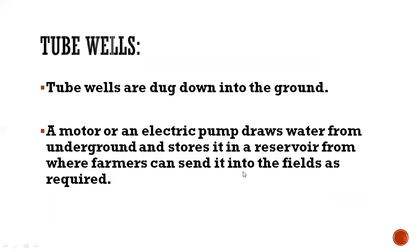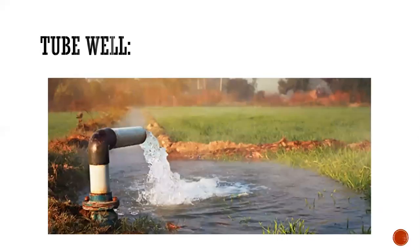Tube wells are dug down into the ground and a motor or electric pump draws water from underground and stores it in a reservoir, from where farmers can send it to the fields as required. You can see here how they work and how tube wells look.